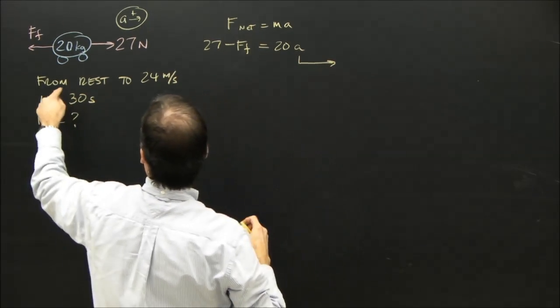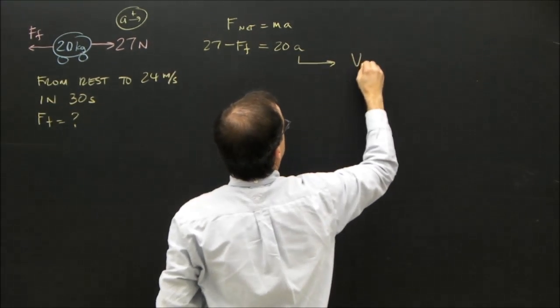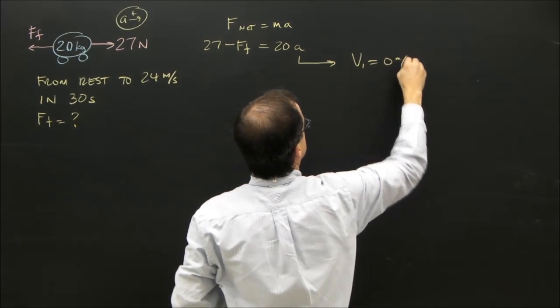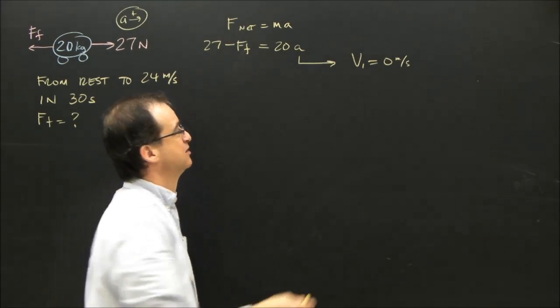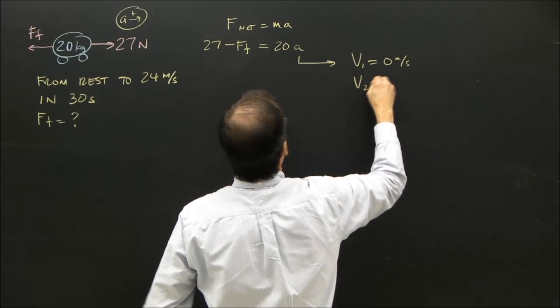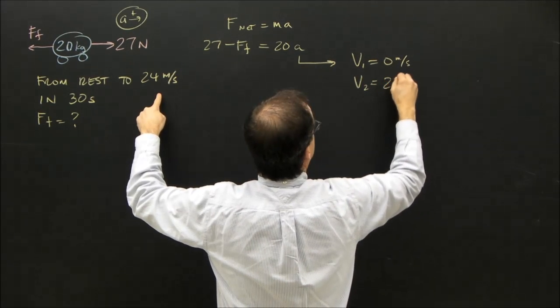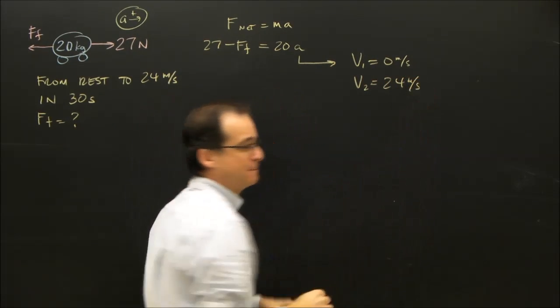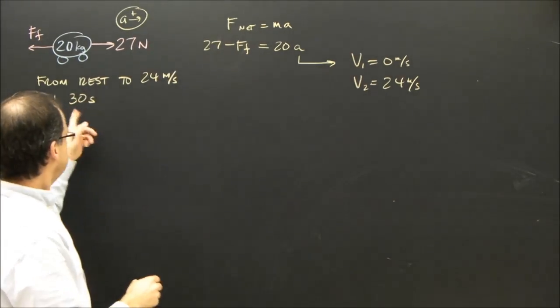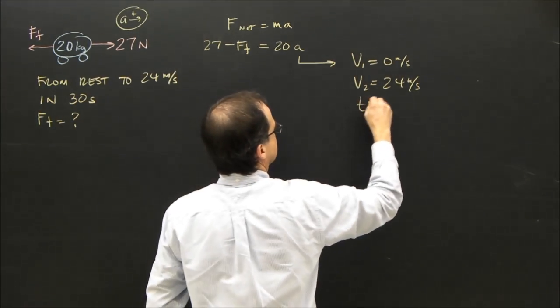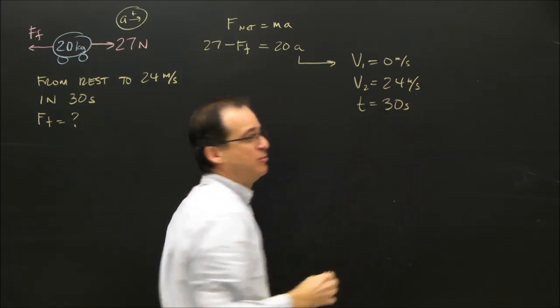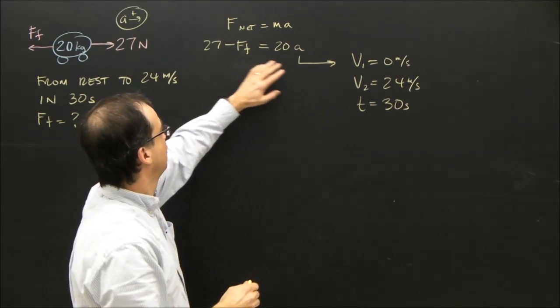How do I get the acceleration? I've got to say, okay, I have some other variables. V1 is 0 meters per second, because it says from rest. It says to a velocity of 24 meters per second, which is pretty fast, in 30 seconds. So from my kinematics information, I'm going to solve for the acceleration, and then I can use my Newton's second law.